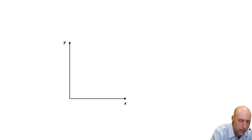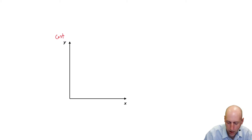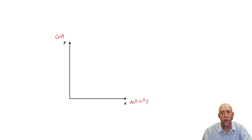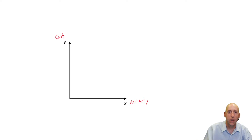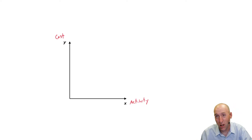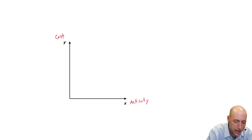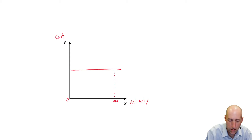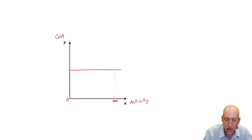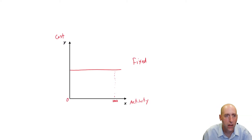Our y-axis is always our cost and our x-axis I call activity — it's like the number of units made. So let's say we are a car manufacturer making cars. Whether I make one car or a thousand cars out of my factory, my property taxes will be the same. If I make zero cars or a thousand cars, the fact that I own the factory building means my property taxes are the same. The city that charges me property tax doesn't do it based on my productivity. So property tax is a fixed cost, and fixed costs on a graph look like a straight line from left to right.